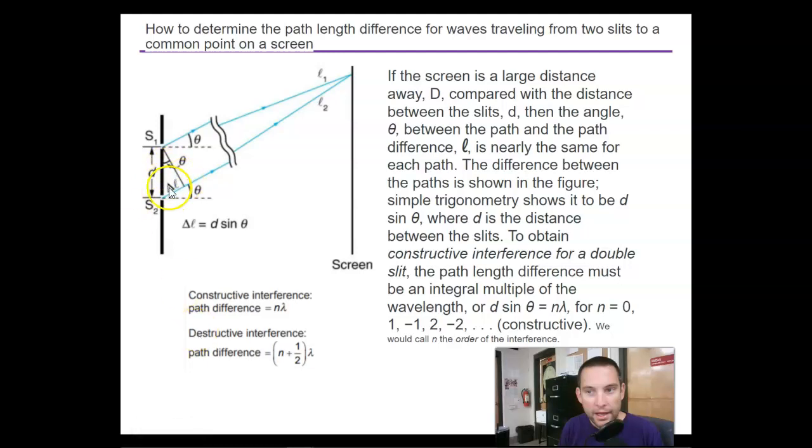Right? Our path difference is just our opposite sine theta, where d is the distance between the slits. To obtain constructive interference for a double slit, the path difference must be an integral multiple of the wavelength.